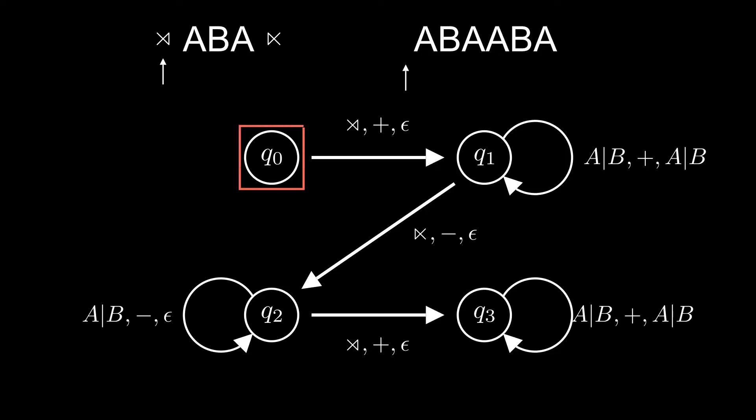In the starting state, we read the left edge marker. We move forward in the input string and output nothing. In the second state, we read As and Bs. When we do, we move forward and output the symbol we just read. We do this for ABA and output ABA.